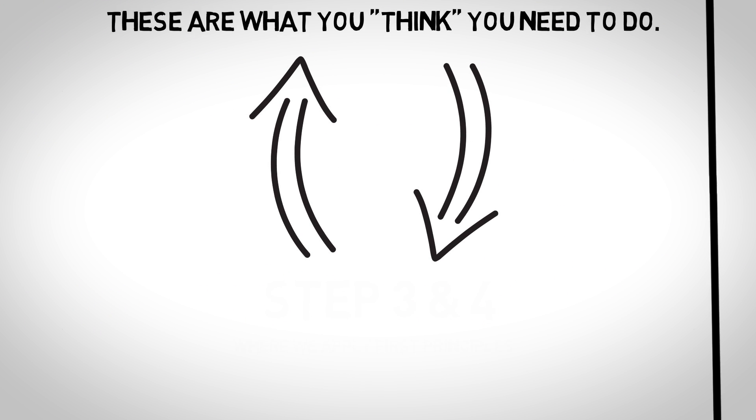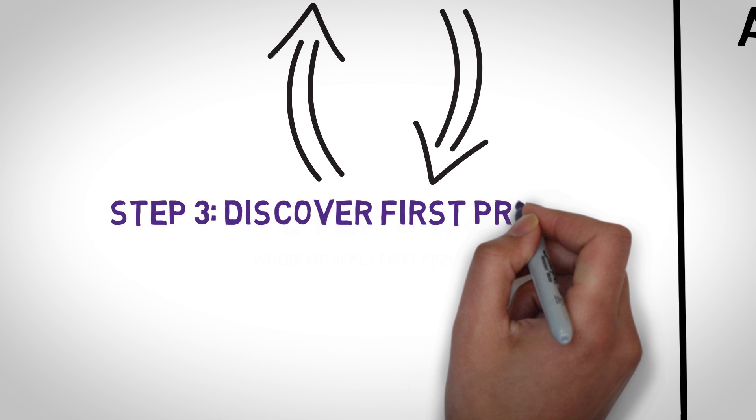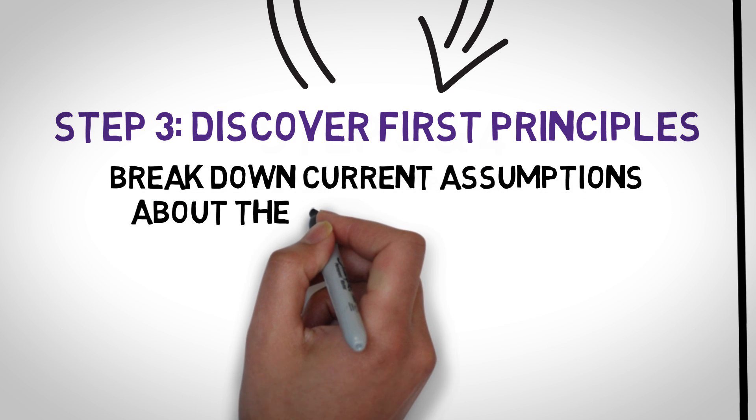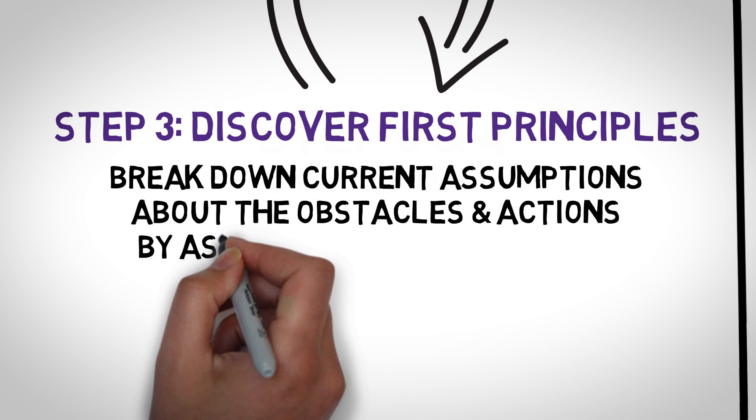This is where step 3 comes in. Identify current assumptions about the obstacles and actions needed to get closer to your goal. Break it down into first principles by asking powerful questions. And this is exactly what Elon did.